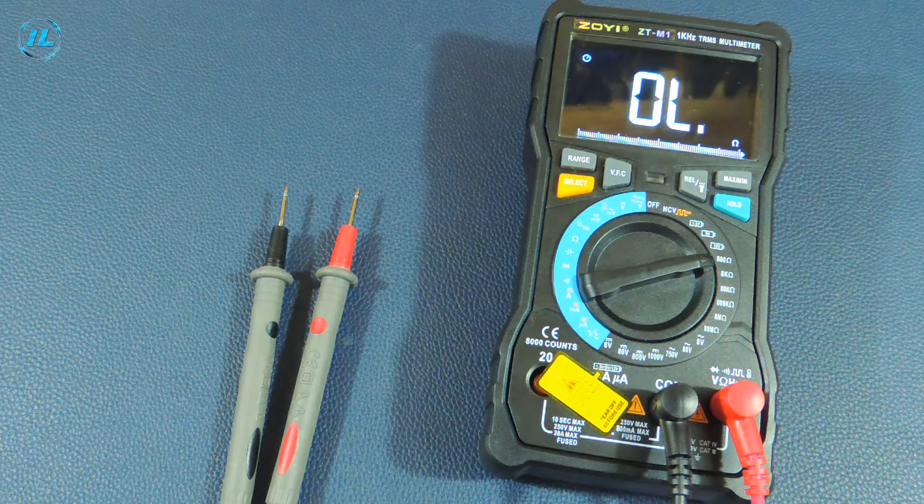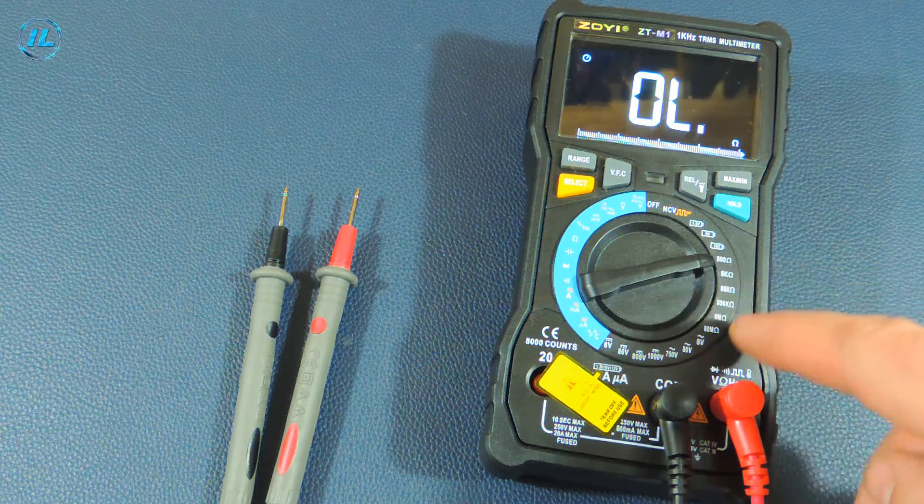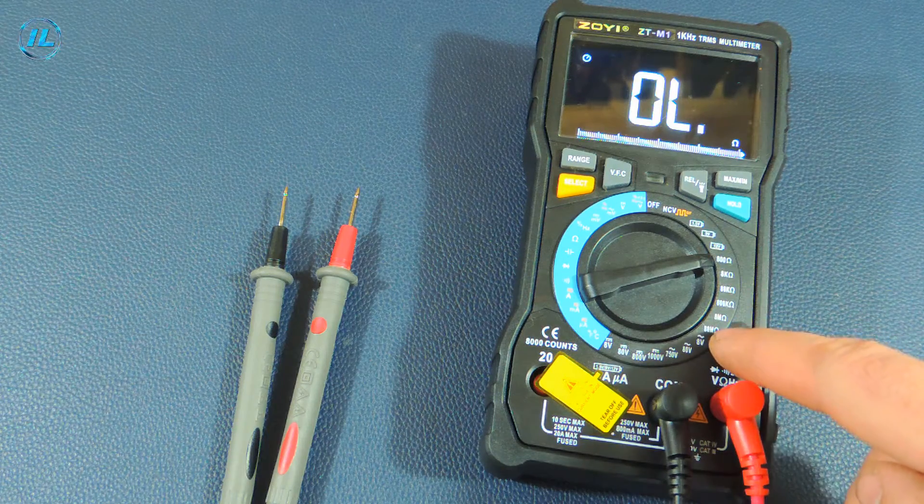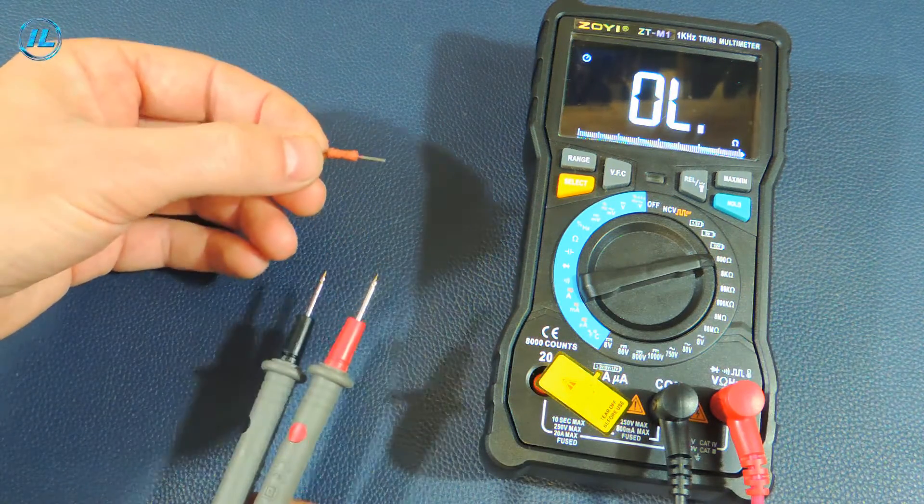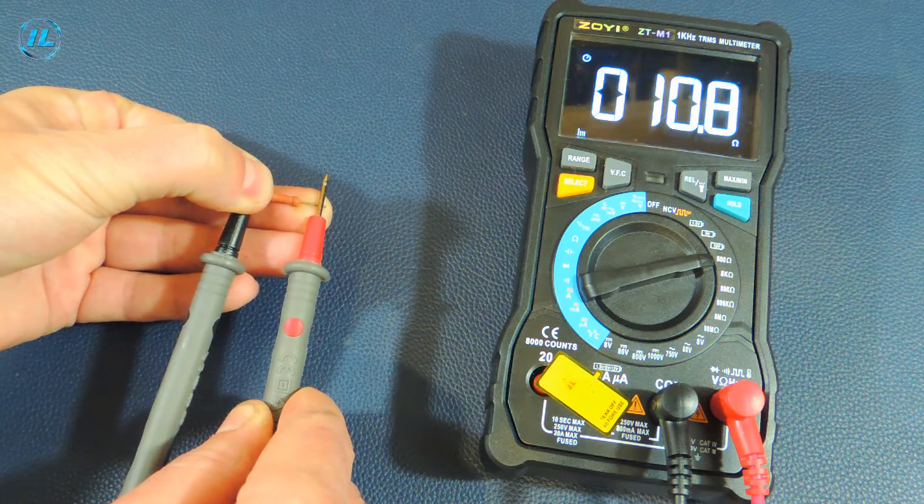The next few points are the measurement of resistance. The first range is 800 ohms and the last is 80 megaohms. I'll check a few resistors. This is at 10 ohms: 10.8 ohms.